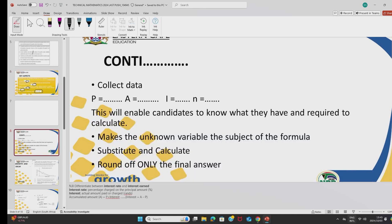What do you do now that you've got the statement? You will read the statement slowly with understanding, and then you collect data. That is, you write the four letters of your formulas. We've got P for the principal amount, we've got A for the accumulated amount, we've got I for the interest rate, and N for the number of years.